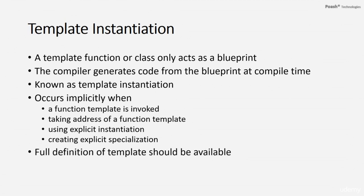For template instantiation to work, the compiler should be able to see the full definition of the template. That is why function and class templates are always defined in a header file. Templates generally do not use the conventional style of declaration and definition — the definition is implemented in the header file. Now let's look at some examples of argument deduction and template instantiation.